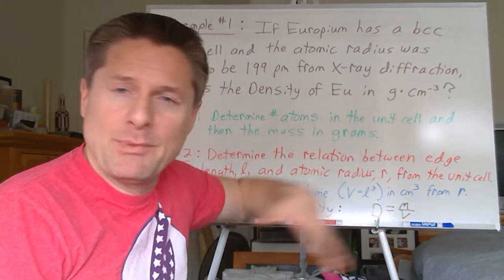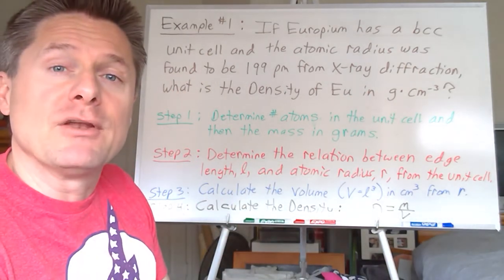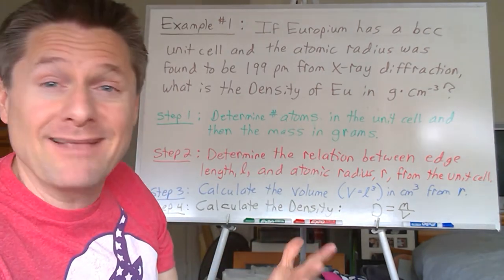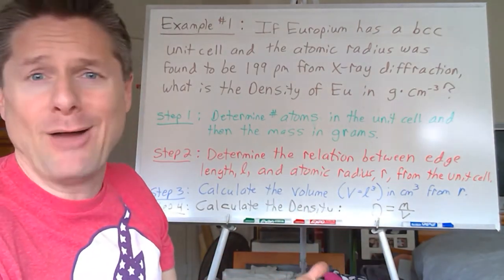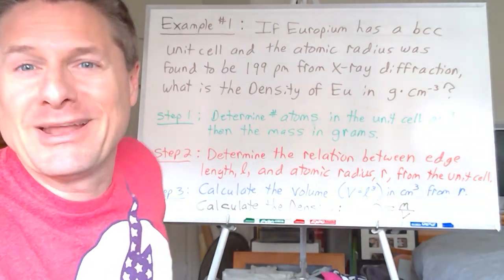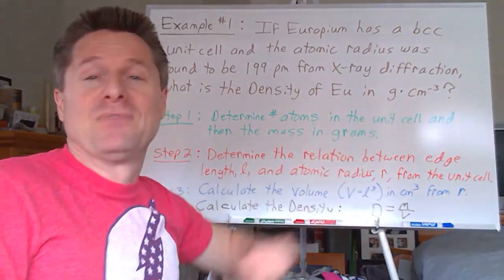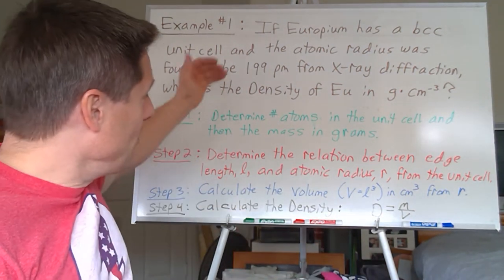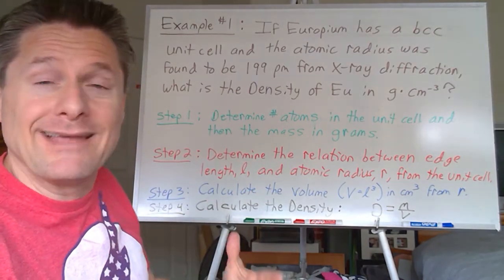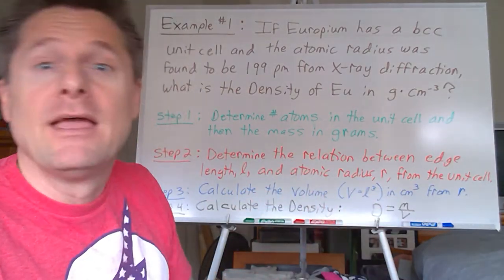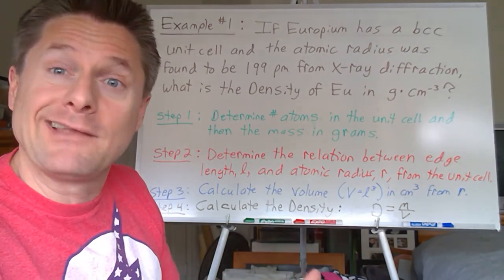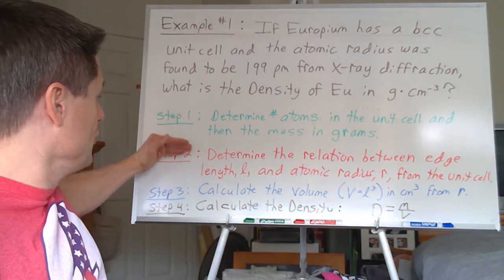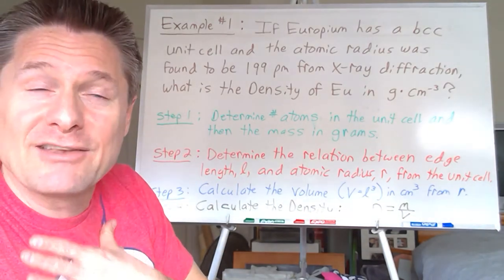What's the density of europium? Typically solids will be in grams per centimeters cubed — that's assumed. Here are the steps. Don't necessarily have to be in this order, but ultimately density is mass over volume. We need the mass and we need the volume. You could do the volume first and the mass second; it doesn't really matter. But this fourth step has to be fourth.